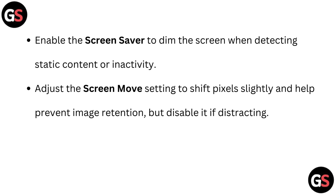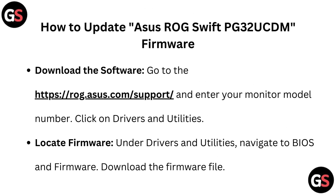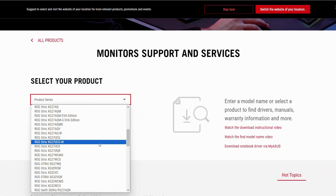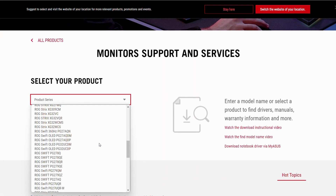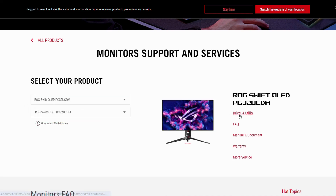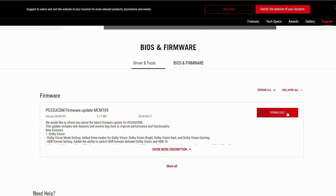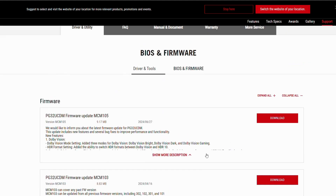Adjust the screen move setting to shift pixels slightly and help prevent image retention, but disable it if distracting. To update the ASUS ROG Swift PG32 UCDM firmware, go to rog.asus.com/support — check the link in the description — and enter your monitor model number. Click on Drivers and Utilities, then navigate to BIOS and Firmware to download the firmware file.